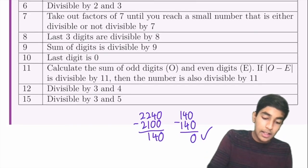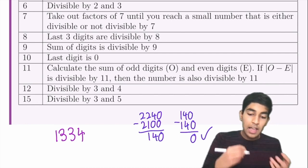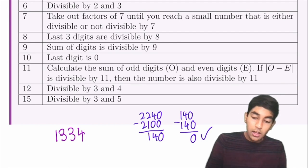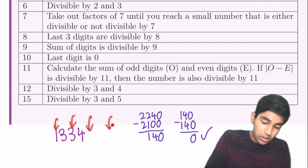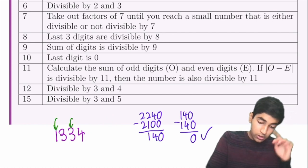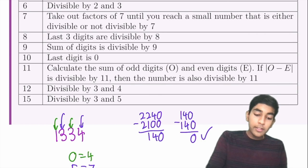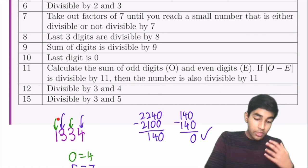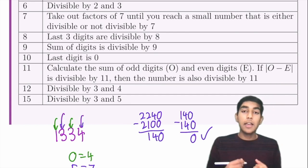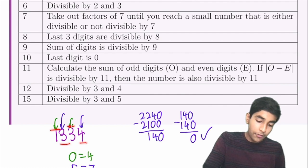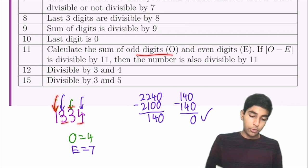For 11, take the number 1334 as an example. Sum the odd-position digits (1st, 3rd, ...): 1 + 3 = 4. Sum the even-position digits (2nd, 4th, ...): 3 + 4 = 7. If their difference is divisible by 11, so is the number. Note: it's not odd/even digits, but odd/even position digits. For 12, it must be divisible by both 3 and 4. For 15, divisible by both 3 and 5.